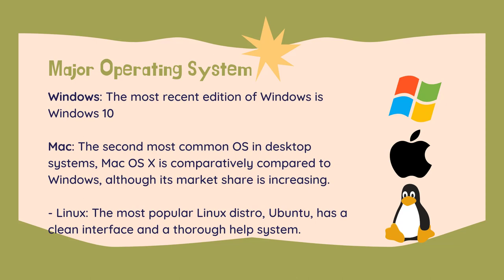Linux, while rare compared to Windows, does have its advantages. Linux is open source, which means that anyone can change the code and redistribute it as they want, resulting in many different versions. Though it can be daunting, a Google search can help the average person decide which version would be best for them. There is a wide range of versions called distros, ranging from ones meant to fit on a 50MB business card-sized CD to ones easier to use than Windows. The most popular Linux distro, Ubuntu, has a clean interface and a thorough help system.